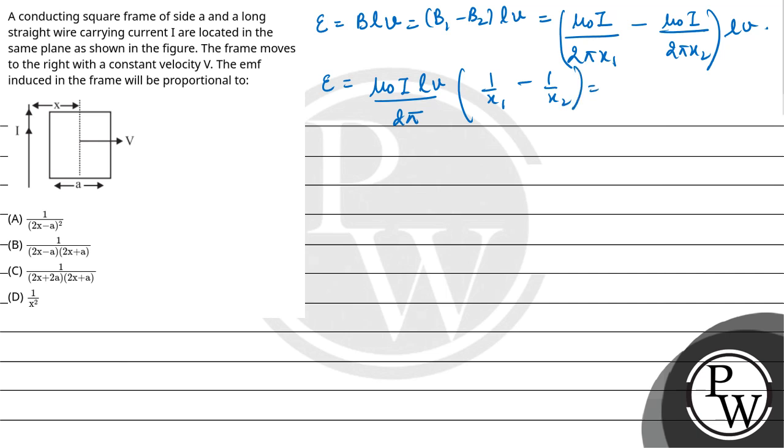EMF is equal to mu naught I LV upon 2pi into 1 by X1 minus 1 by X2. Mu naught I LV upon 2pi. Now X1 is the value of X minus A by 2 minus 1 upon X plus A by 2. So EMF is equal to mu naught I LV upon 2pi.